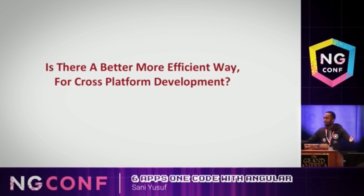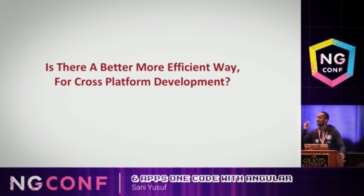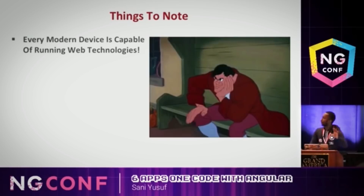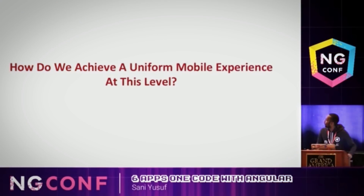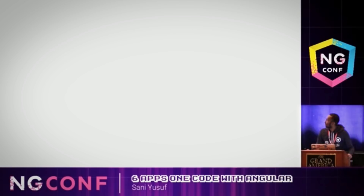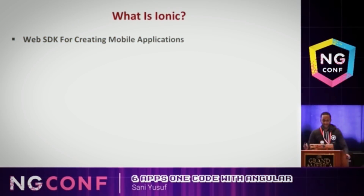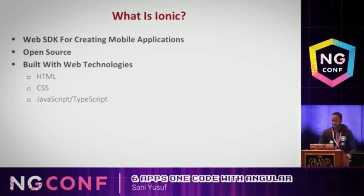So we start to think: is there a better, more efficient way for cross-platform development? The first thing is every modern device today is capable of running web technologies. So how do we achieve a uniform mobile experience at this level? This is where Ionic comes into play.